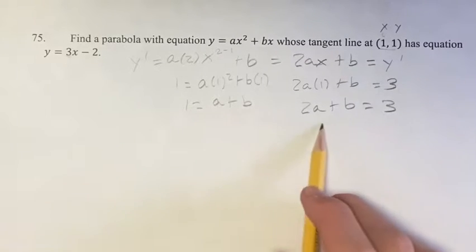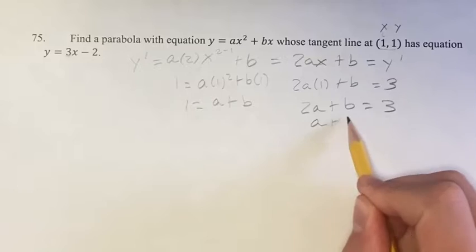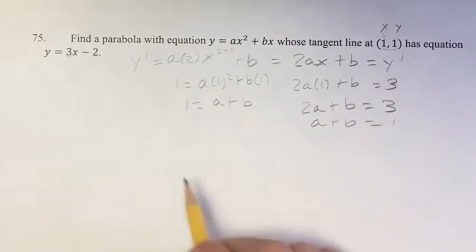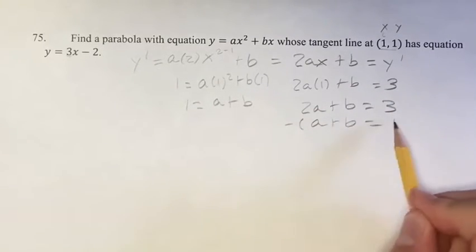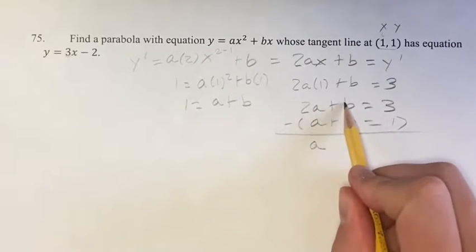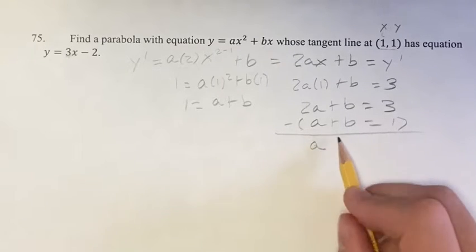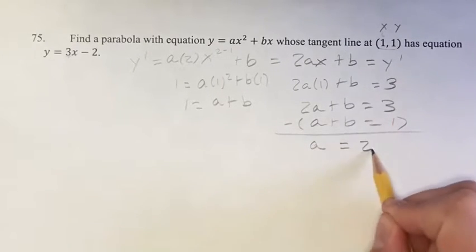Now we have two equations for two variables, so we can solve for the variables. We get a plus b is equal to 1. If we subtract them, then we can do elimination. So we get 2a minus a is a, plus b minus b is 0. That's equal to 3 minus 1 is 2.